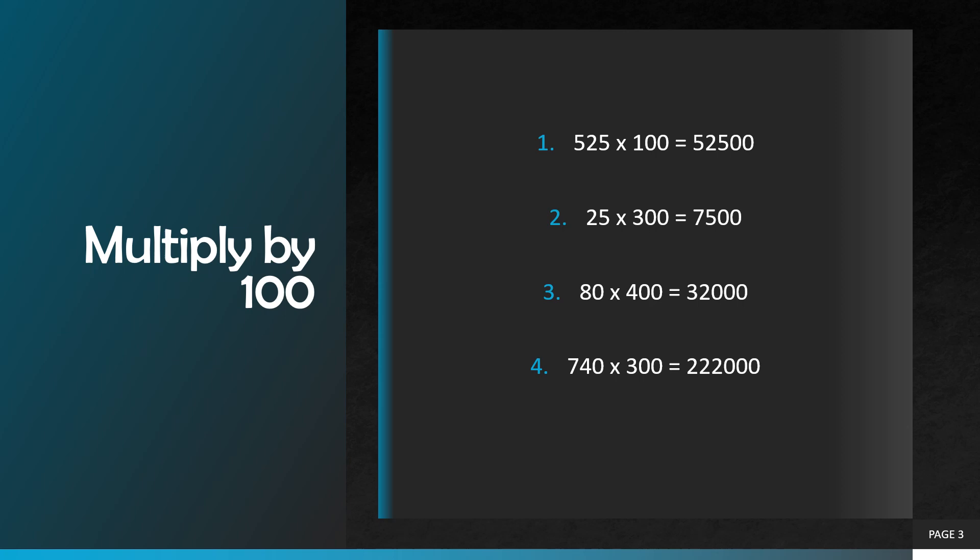Question number two: twenty five multiplied by three hundred. We are going to add two zeros in our answer. Twenty five multiplied by three is equal to seventy five, so our correct answer will be seven thousand five hundred.